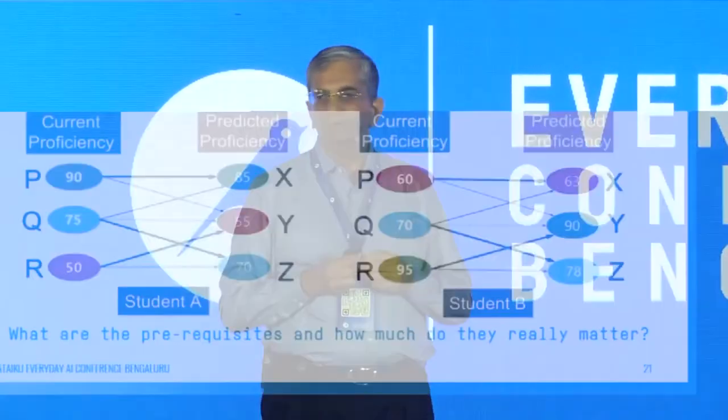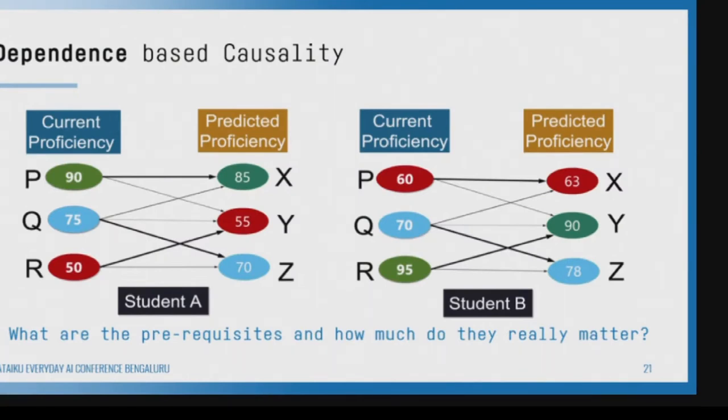Another notion of causality is dependence-based causality. Imagine we are building a personalized education system. A student opens his digital school and sees he is doing very well in concept P, medium in Q, and very bad in R. What should you recommend? The app can go back in the dependence-based causality structure among concepts and figure out that he is struggling with, say, minus of minus, and he is in 12th grade but nobody paid attention to that.